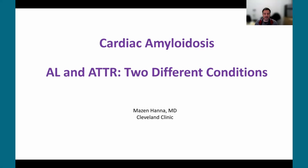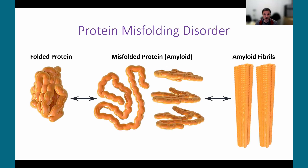Good morning. My name is Mazin Hanna from the Cleveland Clinic, and I'm going to be discussing cardiac amyloidosis — the two main types, AL amyloidosis and ATTR amyloidosis, and how these two conditions differ.